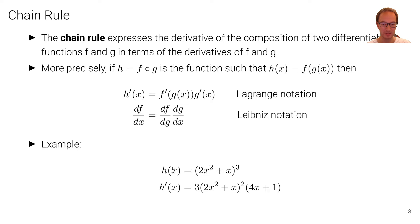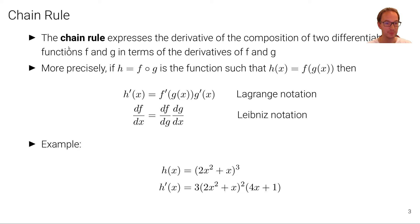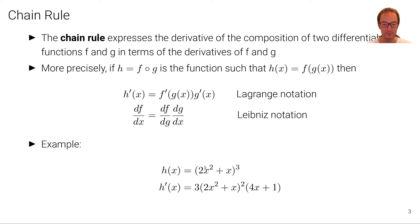Here's a simple example. Let's suppose the function h(x) equals (2x² + x)³. Then if we take the derivative of h(x), we have to use the chain rule because it's a composition of two functions: the function 2x² + x, and the function x³. So we first take the outer derivative, which is 3 times (2x² + x)², and then multiply by the inner derivative, which is the derivative of 2x² + x with respect to x, giving 4x + 1.